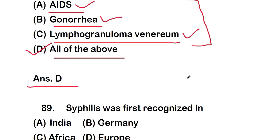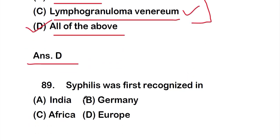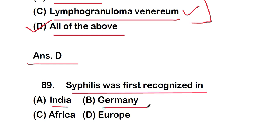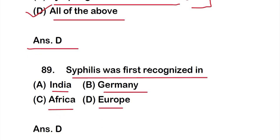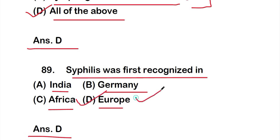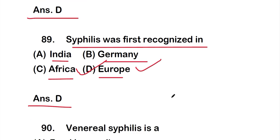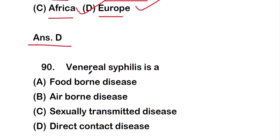Question number 89: Syphilis was first recognized in — option A: India, option B: Germany, option C: Africa, option D: Europe. The correct answer is option D — syphilis was first recognized in Europe.